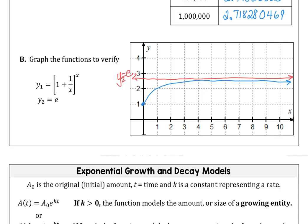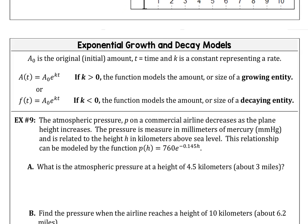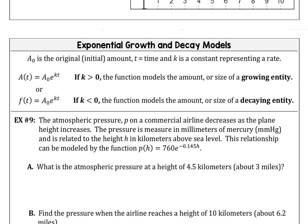For example 9, again, we're going to revisit the exponential growth and decay models. You can see those models here with A_0 being the original or initial amount. The t for time and the k is the constant that's either a growth rate or a decay rate depending on whether k is positive or k is negative.